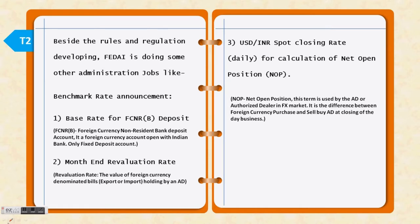FCNRB deposit's full form is Foreign Currency Non-Resident Bank account — it is a fixed deposit account. FEDI declares the base rate for it. Market players in foreign exchange create many assets and liabilities in the market. To calculate how much the liability and asset is in Indian rupees, the rate required for that calculation is declared by FEDI.